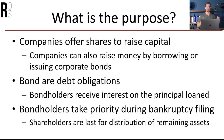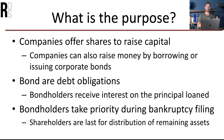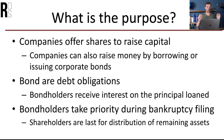Some are fixed and some are variable, but the big difference here is that as a shareholder, you're an owner of the company. As a bond holder, you are basically just holding debt for them, and you are a debt obligation that that company has. Bond holders receive interest on the principal loaned. However, one of the most important things to understand between bond holders versus shareholders is that bond holders take priority during bankruptcy filing.